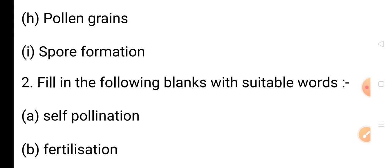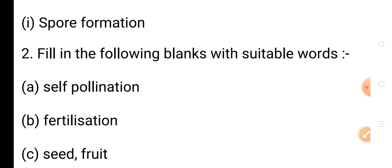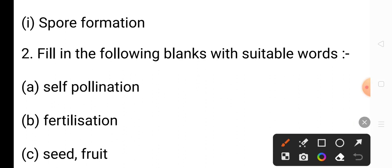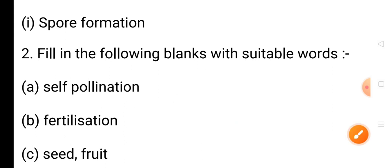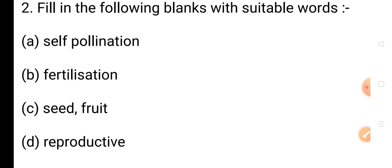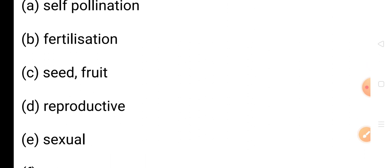Question 2: The fusion of male and female gametes is termed as — fertilization. The answer is fertilization. Question C: After fertilization, ovules become seeds whereas the ovary of a flower becomes fruit. The answer is seeds and fruits. Question D: Flower is the reproductive part of a plant. The answer is reproductive.